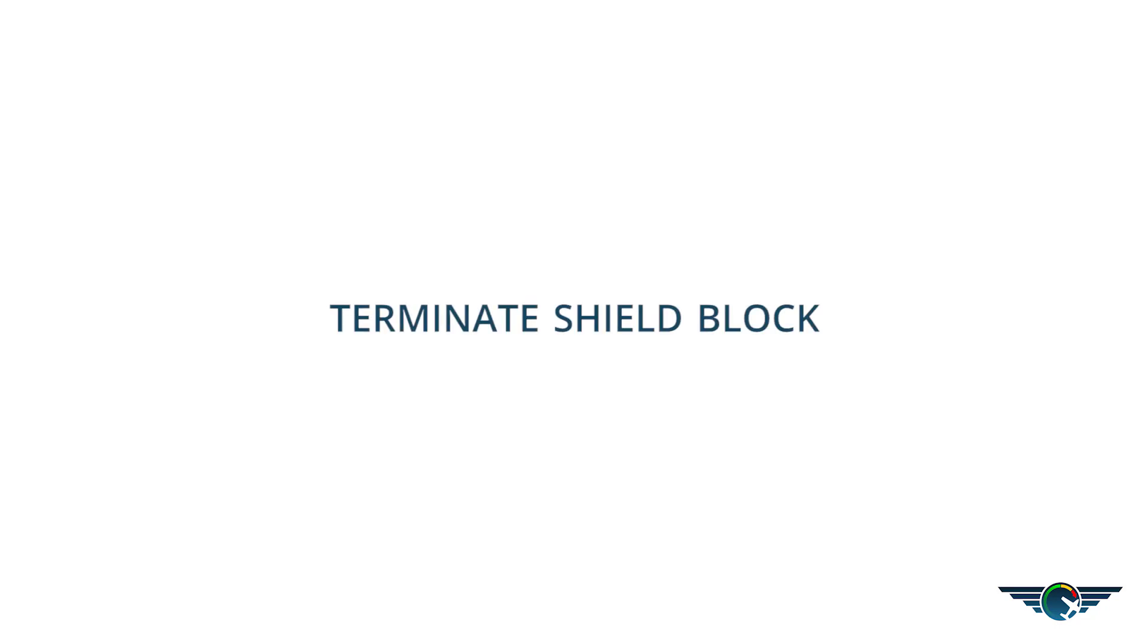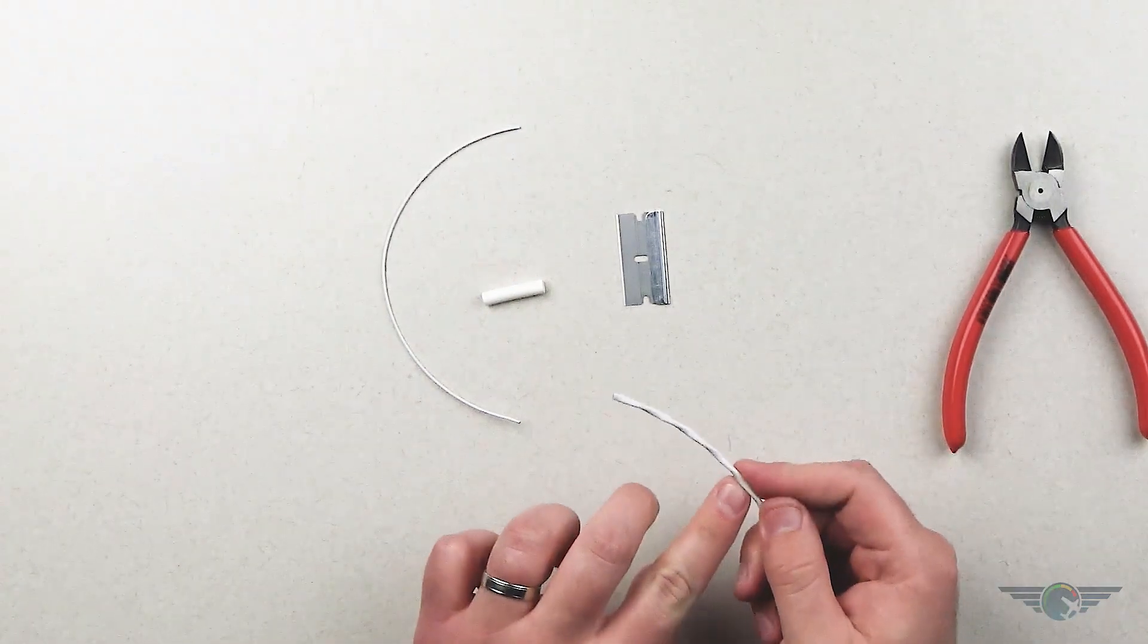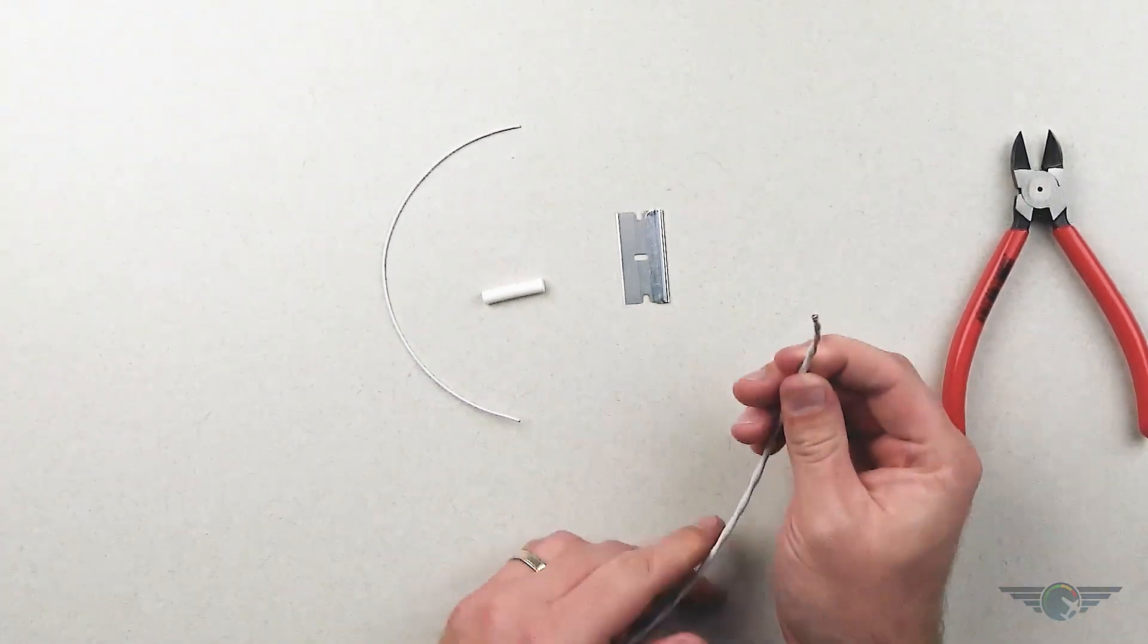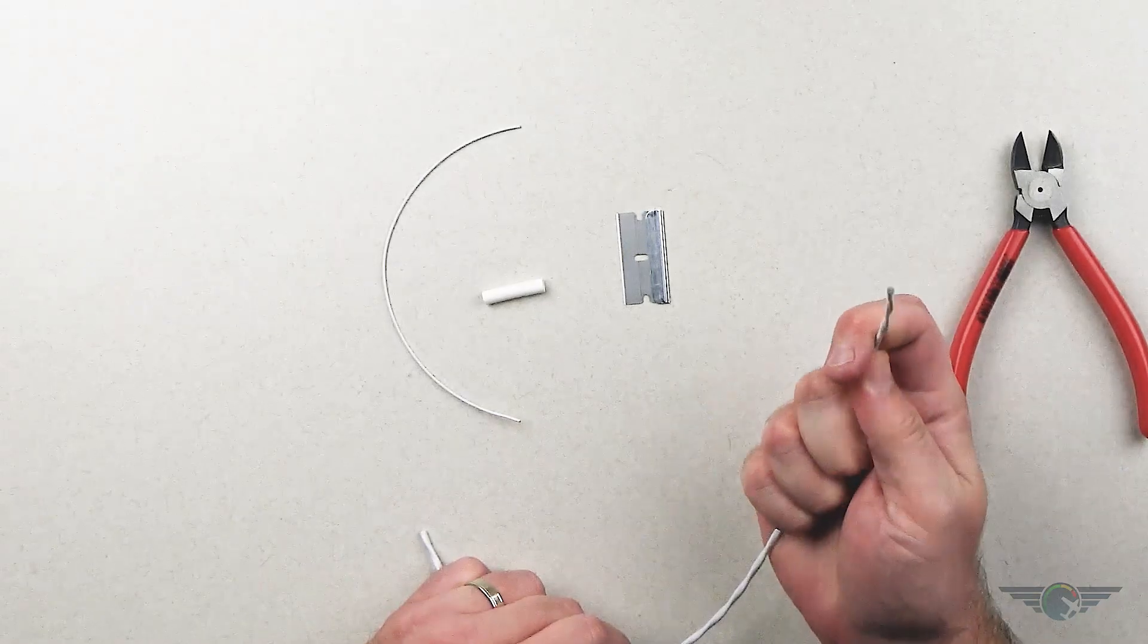I'm going to show you guys how to terminate a shield block or a shield drain. So here's our two-wire CAN bus, mil-spec wire here.